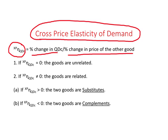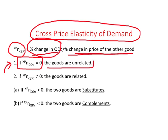If the cross price elasticity of demand turns out to be zero, that means a change in price of the other good has no impact on your demand for coffee. In this case, the two goods are considered to be unrelated, because a change in price of one has no impact on the demand for the other.